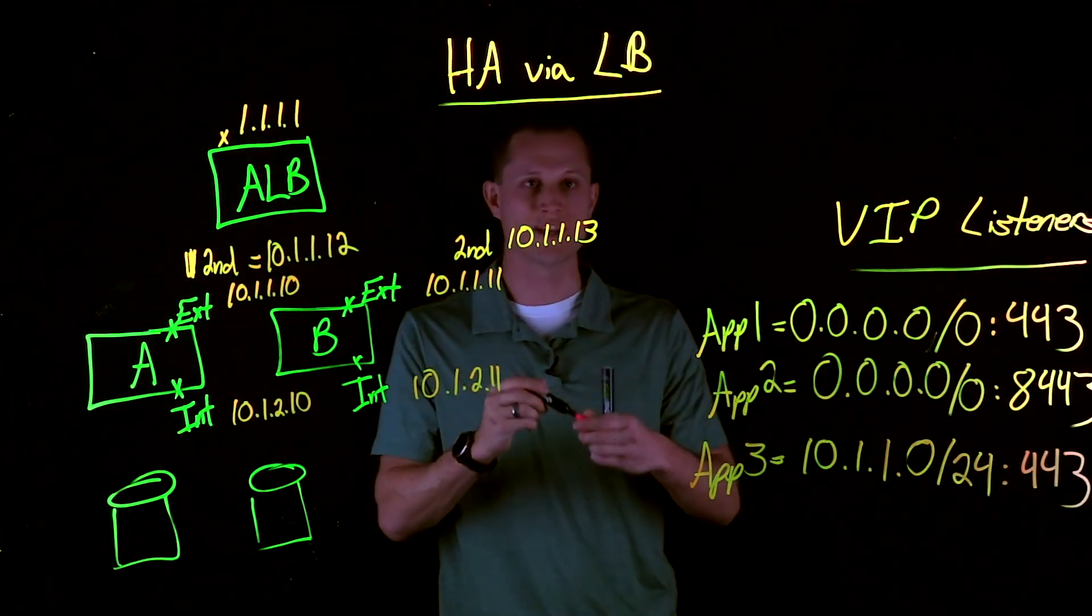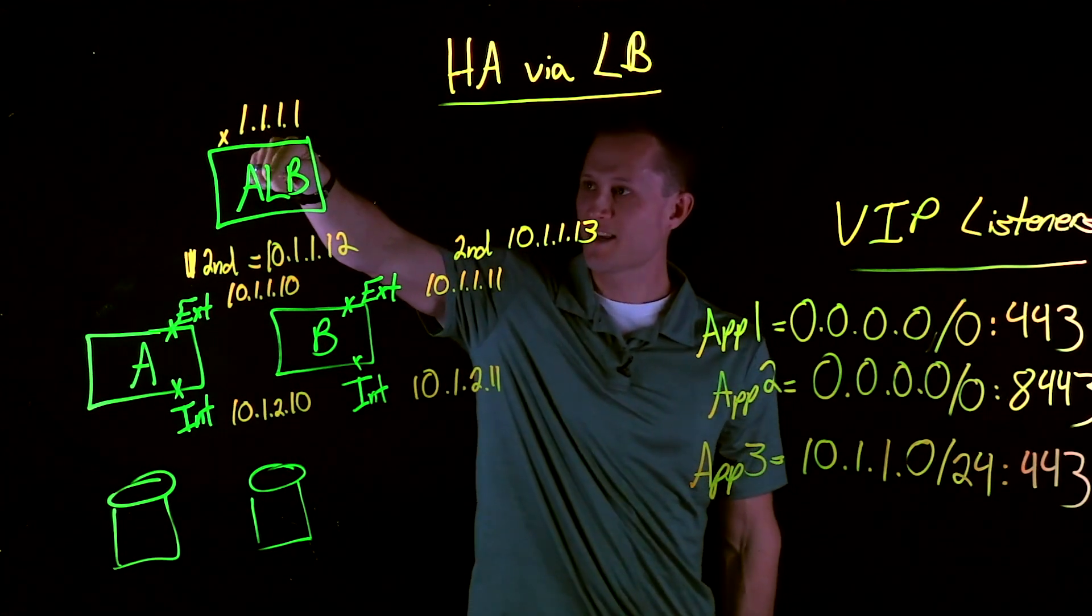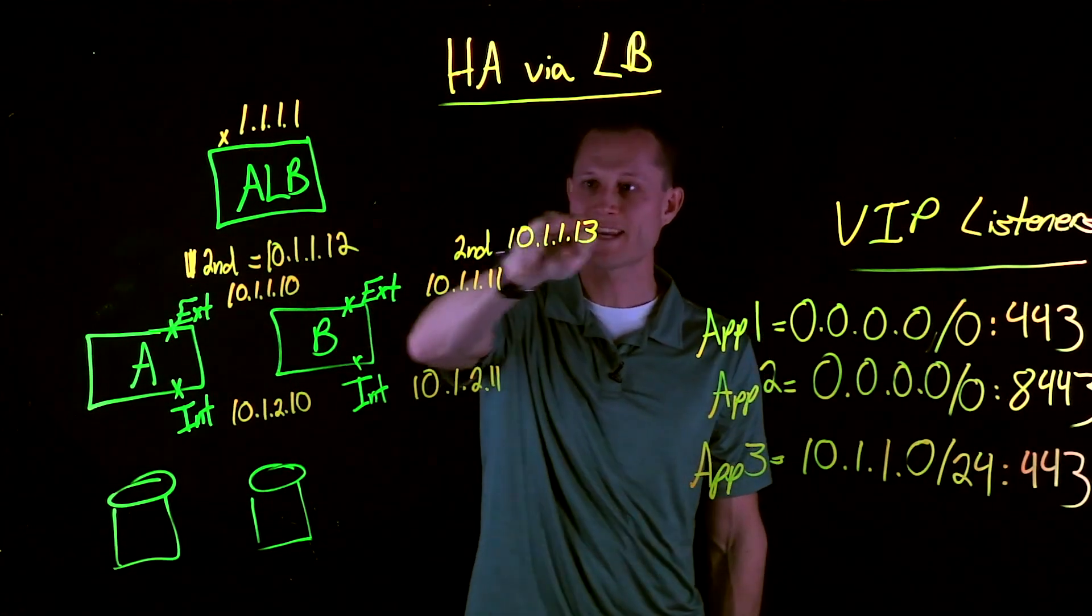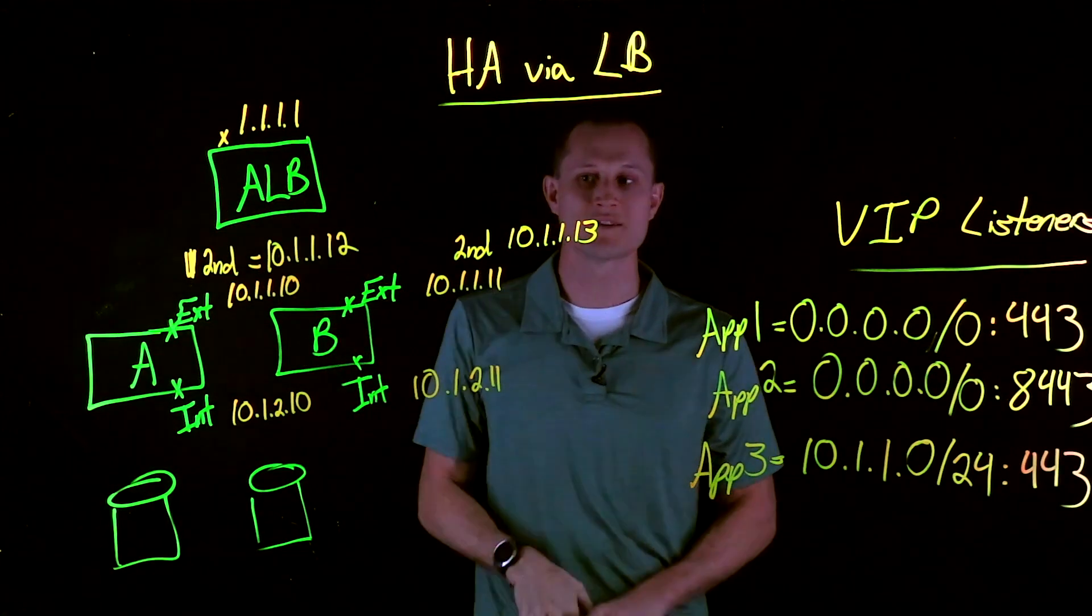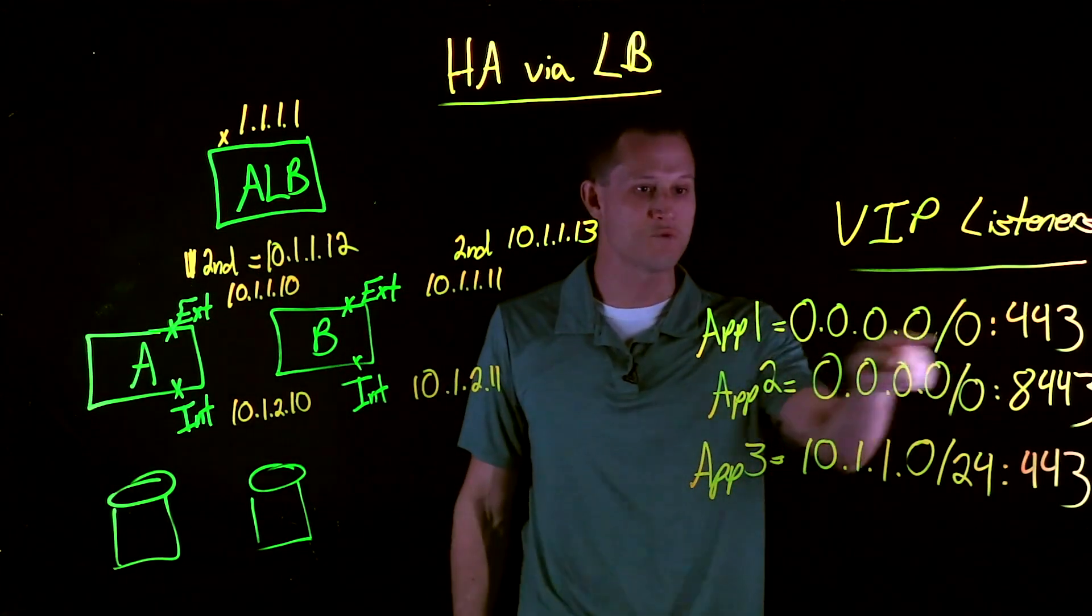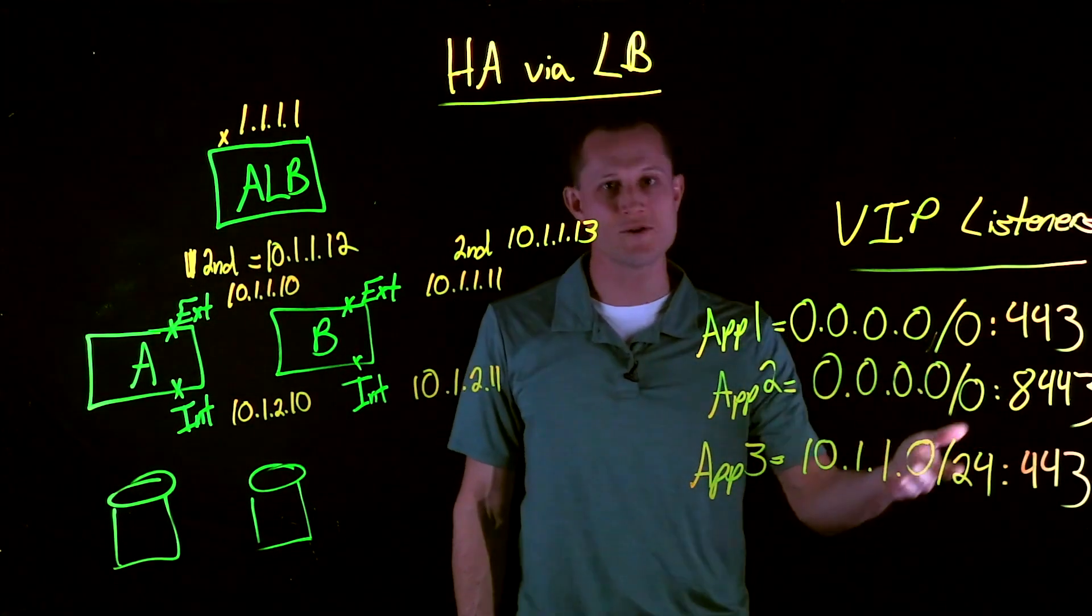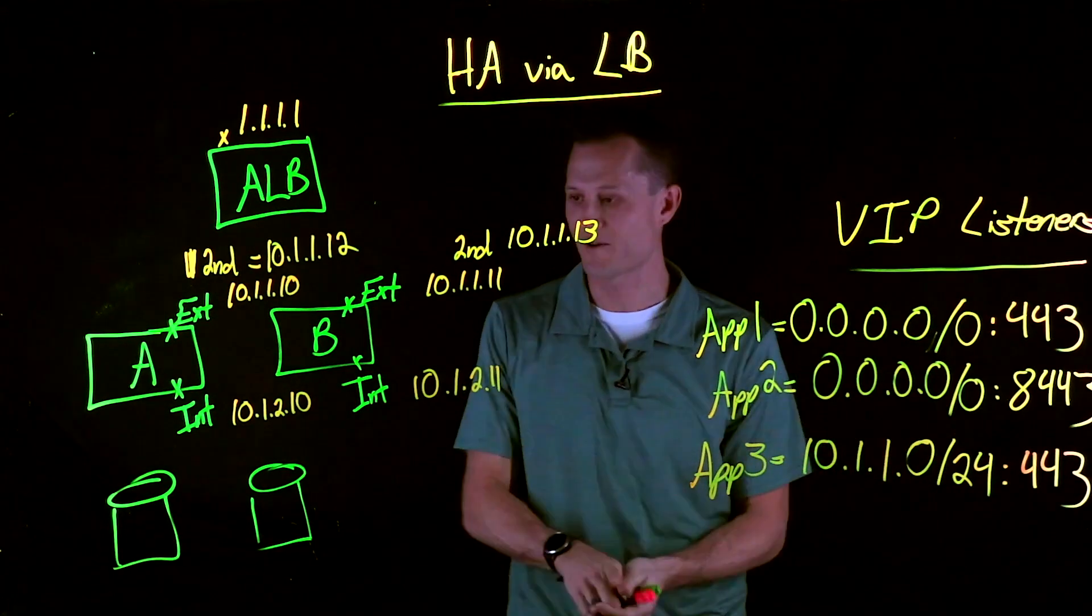And this allows traffic to incoming ALB to the back-end pools using the secondary IPs to equally load balance. Once it hits the F5, it's going to listen to one of the listeners. And then from there you have your typical pool members and configurations to get to the back.